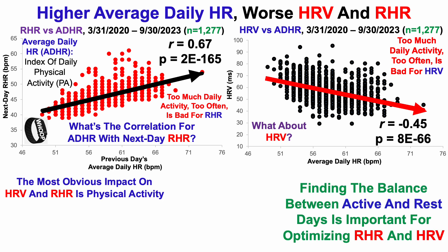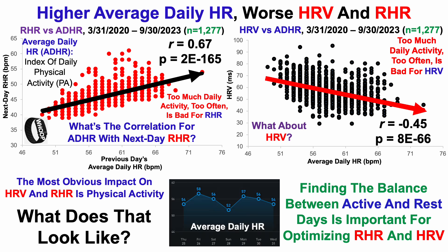So finding the balance between active and rest days is important for optimizing these metrics. Here's a seven-day plot for the average daily heart rate. On the active day — that's the day that includes my usual 85-minute full-body workout with strength training, calisthenics, mobility, and flexibility — after the active day, I purposefully titrate overall activity, the overall average daily heart rate lower for the next two days, and then include my usual workout again, followed by at least two days of a titrated lower average daily heart rate.